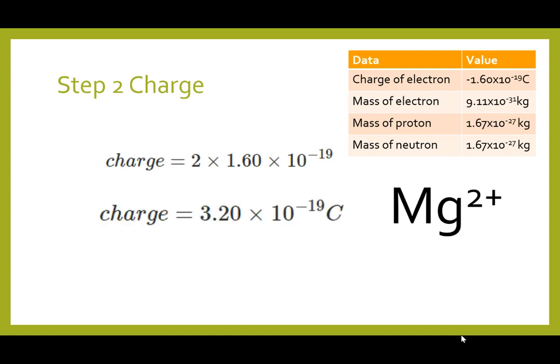And that gives us a charge on the ion of 3.20 times 10 to the minus 19. And we're working in coulombs.